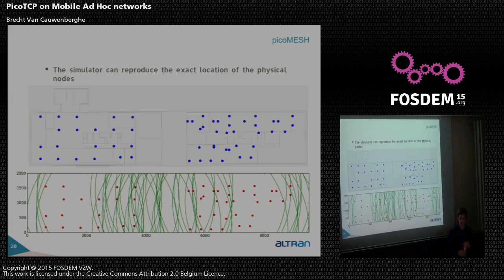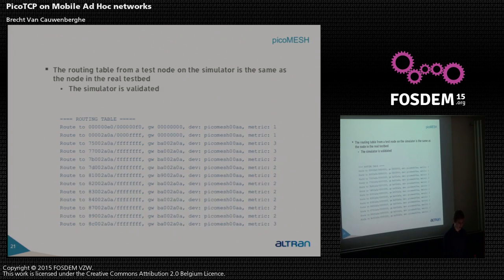This shows the implementation of the mesh network at the university. About 50 nodes are all connecting to each other with the same intelligence, building up routes. You can see many nodes with routes to all different destinations, with their metrics shown on the right-hand side.